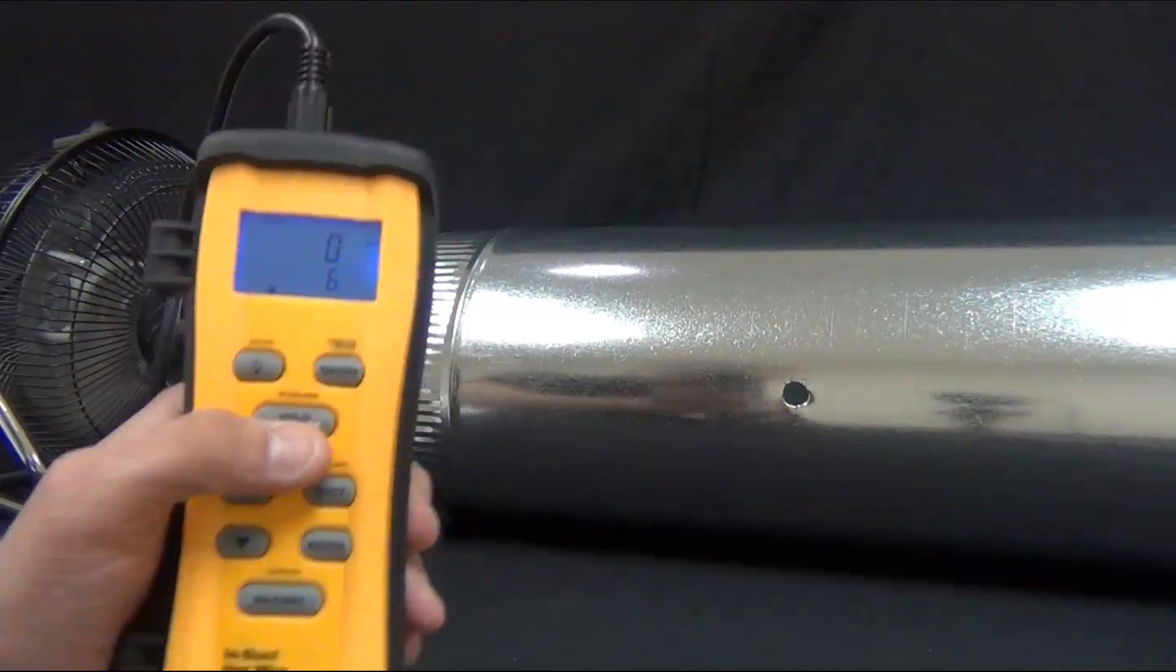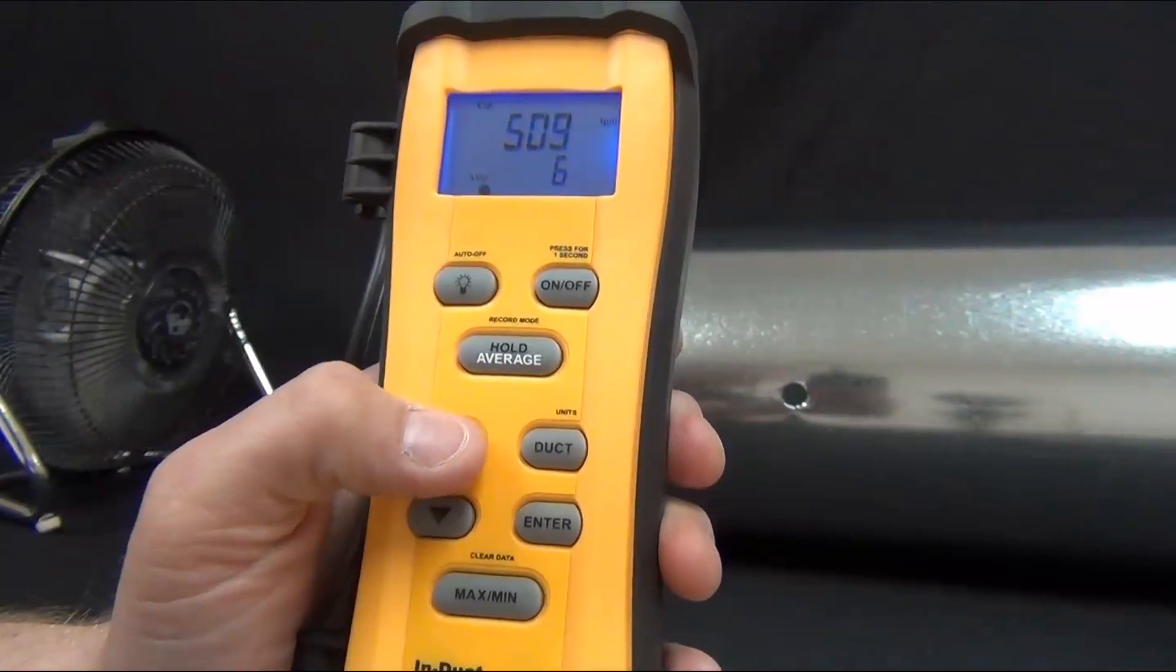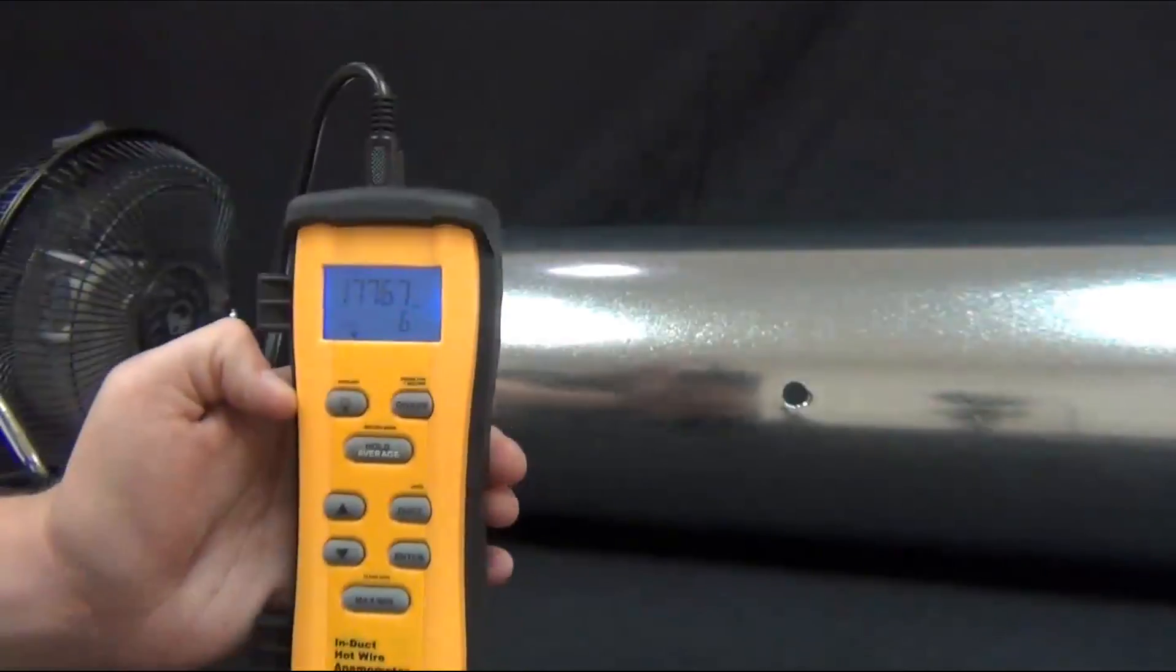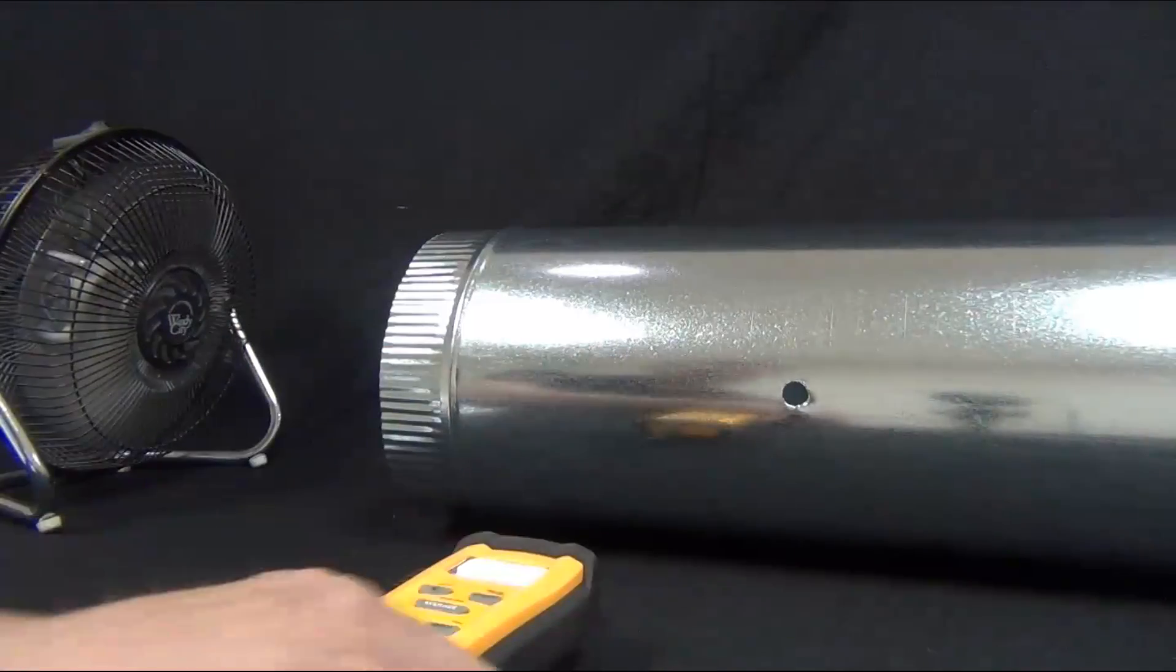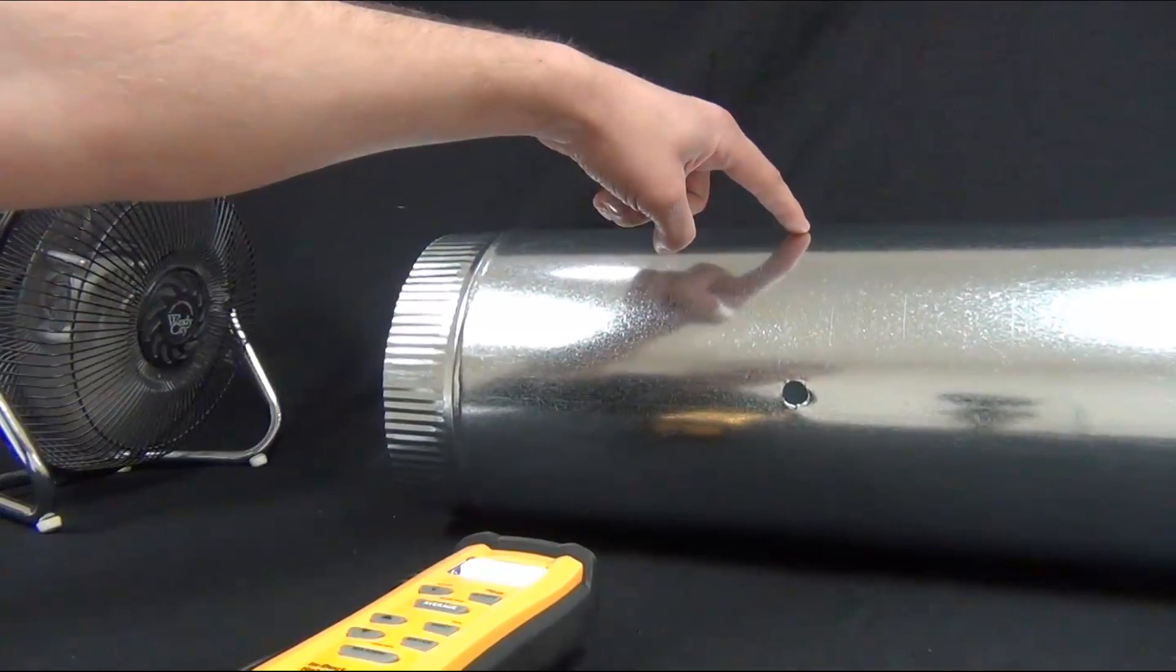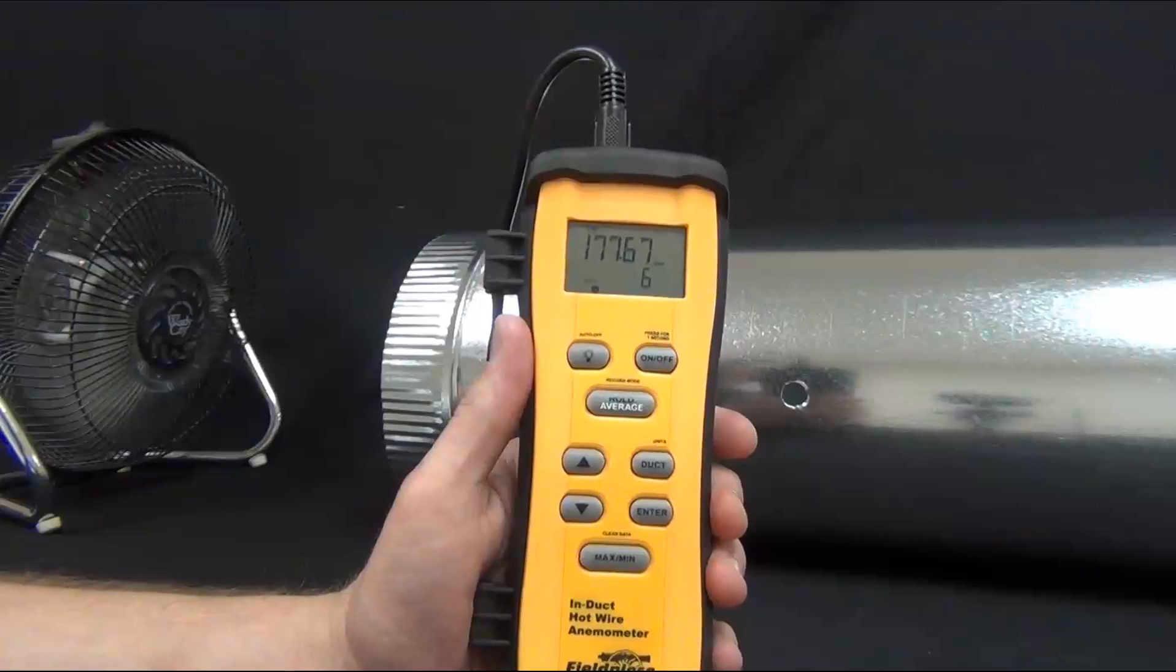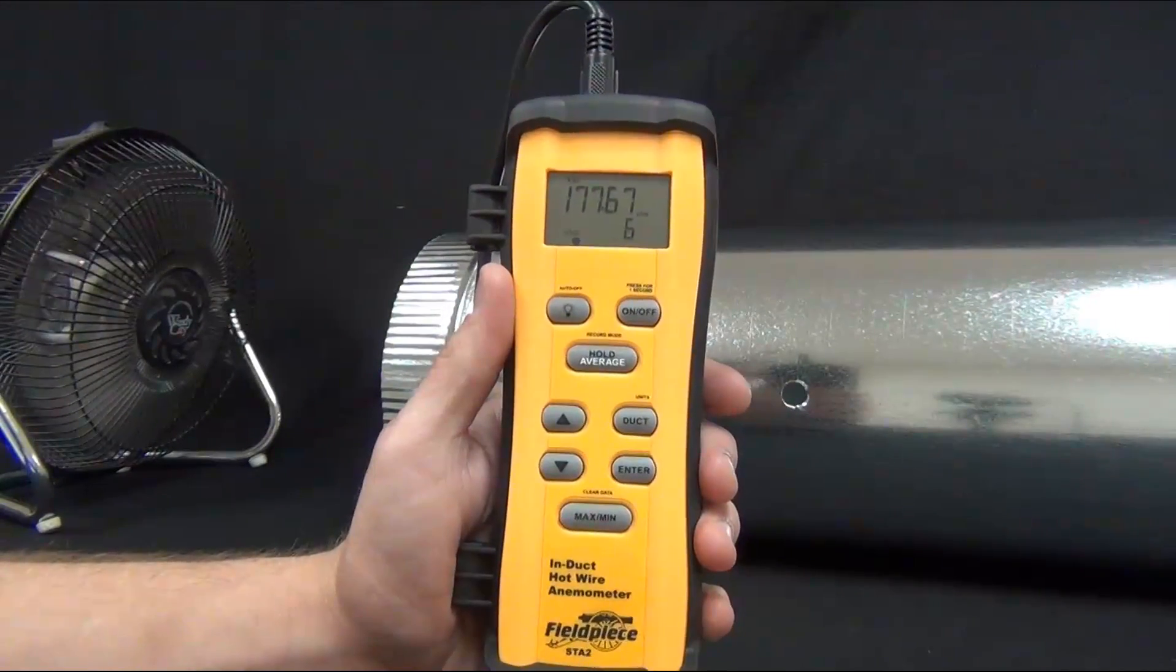To get my average, I just press the average button again, and I have an average 509 feet per minute, average CFM of 177.6. That was fairly close to the timed average. ASHRAE standards for this method tells you to do that three different places across the duct. We would do it here, about a third of the way around, and then again another third of the way around. We'd actually be taking 18 measurements to get a true accurate average of the point method as far as ASHRAE goes. And that is the Fieldpiece STA-2.